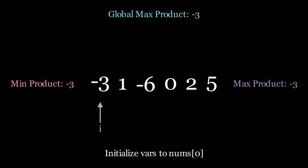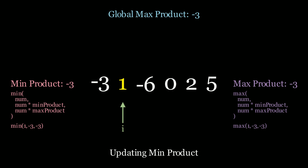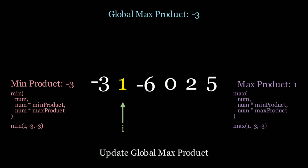Now let's look at the algorithm using a real example. I have three variables initialized: the global max product, which keeps track of the absolute global maximum as we iterate and is what we return at the end; and the running max product and min product up until index i. We initialize all three to the first element in the array, which is negative 3, and start iterating at the second element, which is 1. Processing 1: the min product updates to negative 3 (unchanged), the max product becomes 1 (maximum of 1, negative 3, negative 3). Since 1 is greater than the global max of negative 3, we update the global max product from negative 3 to 1.